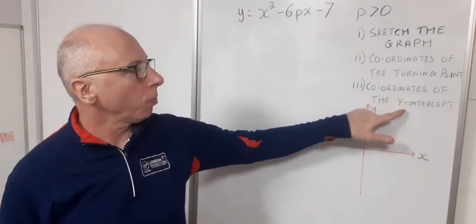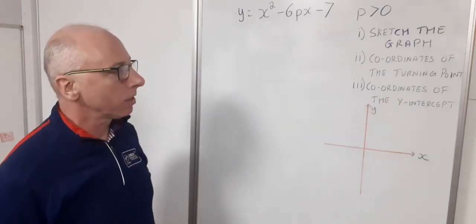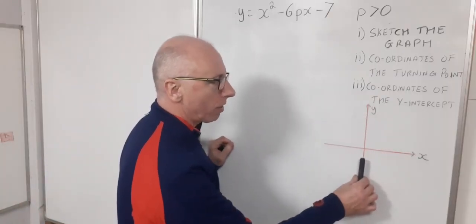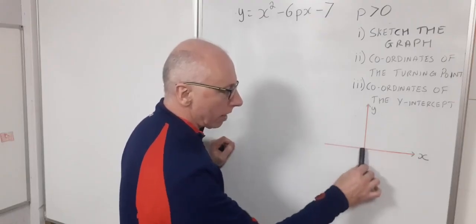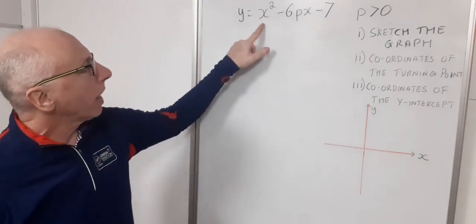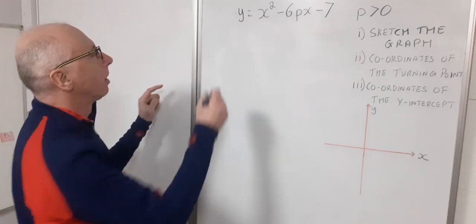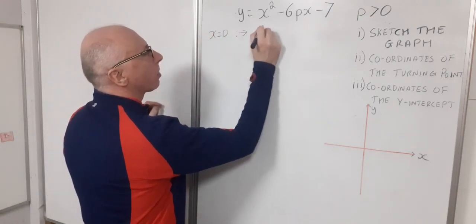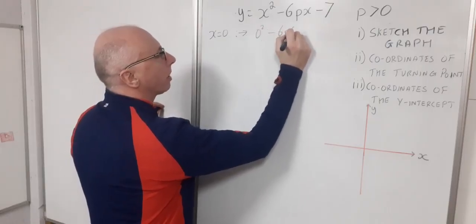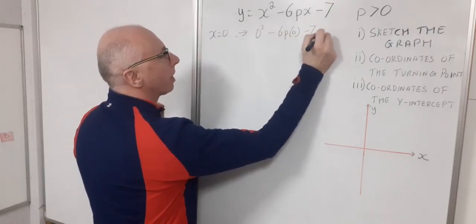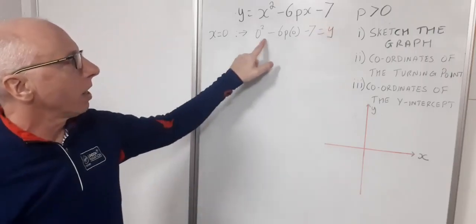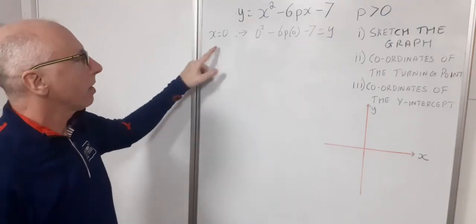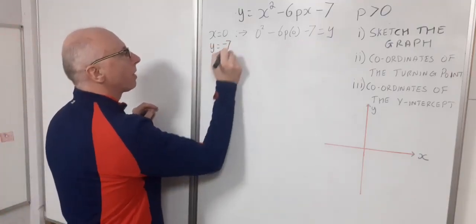So looking at this, coordinates of the y-intercept, that looks the easiest bit to start with. So that's the y-axis. Where the graph will touch that y-axis is when x equals 0. So if I plug x equals 0 into here, I get 0 squared minus 6p times 0 minus 7. And that gives me my y-value. 0 minus 0 is still 0 and minus 7. So for x equals 0, y equals minus 7.